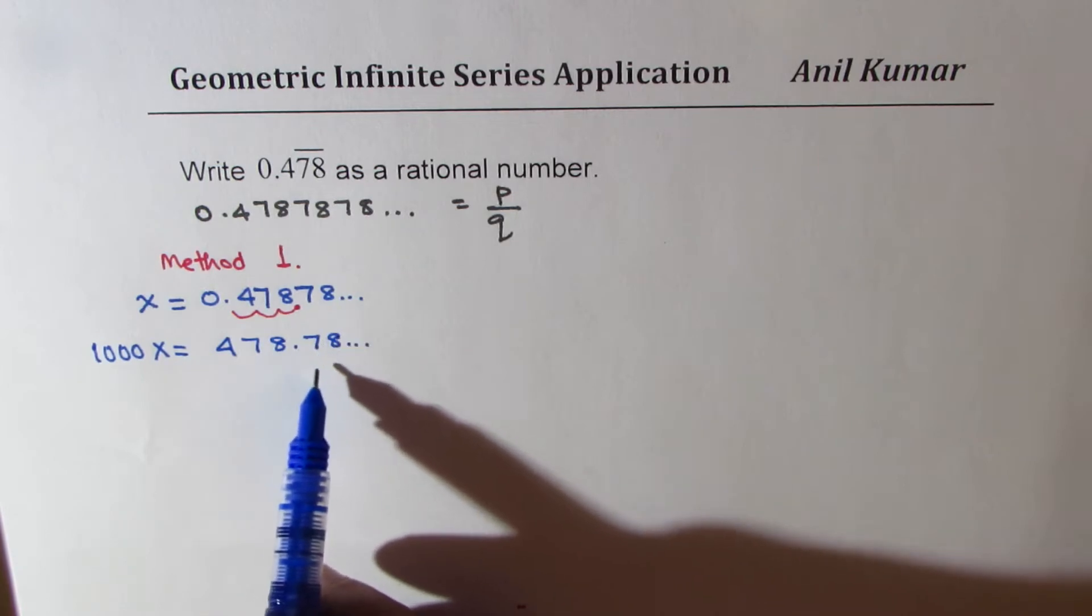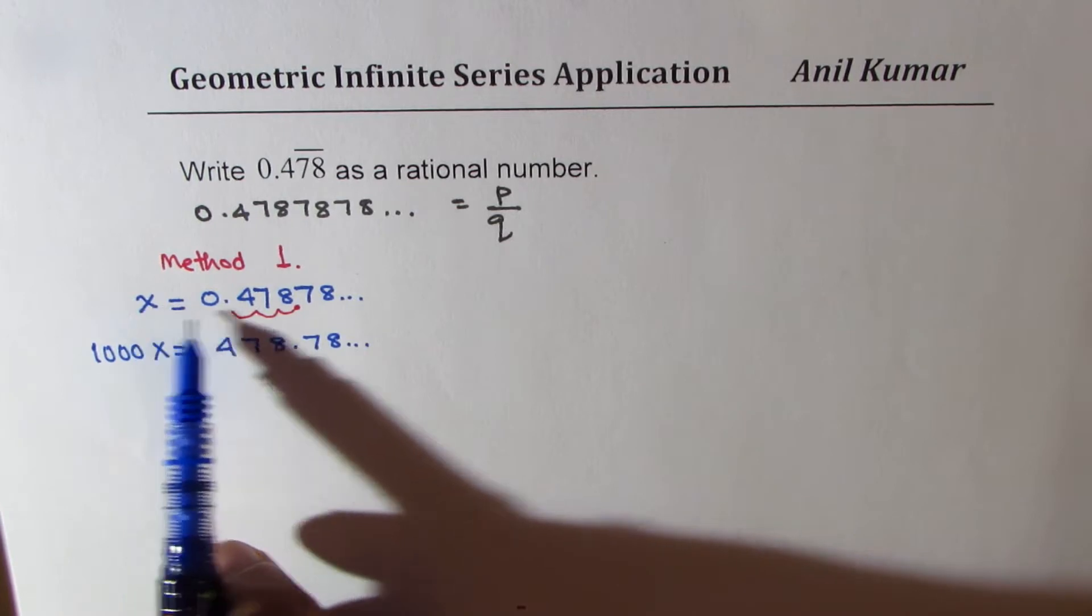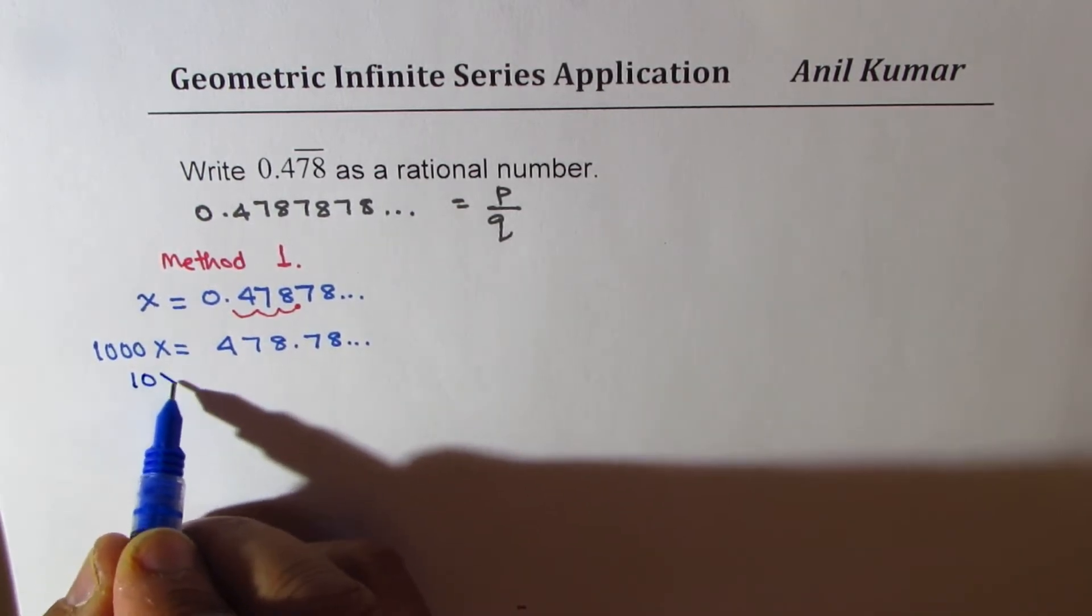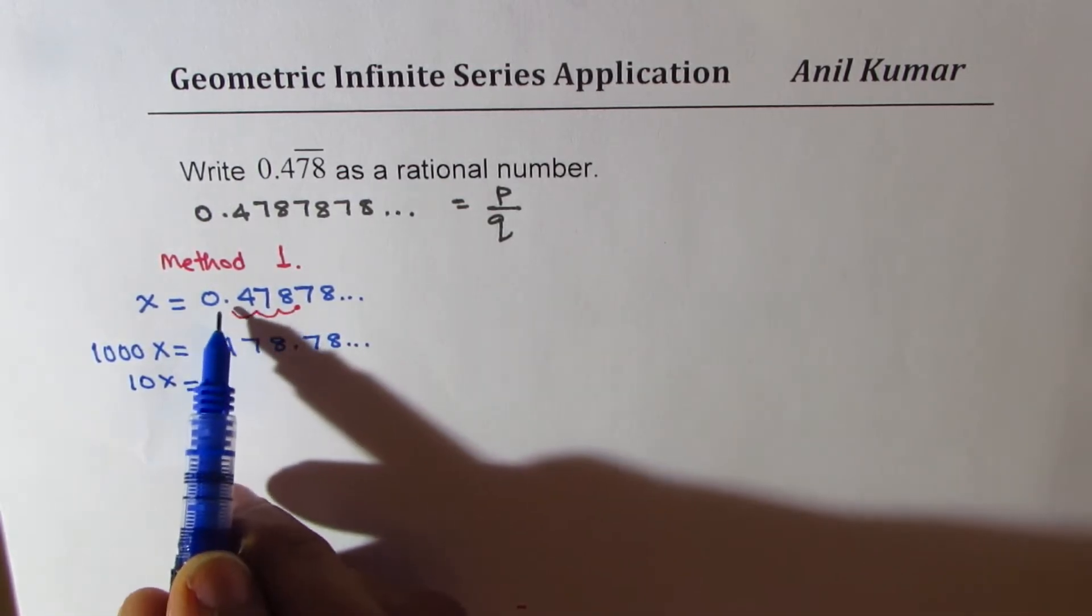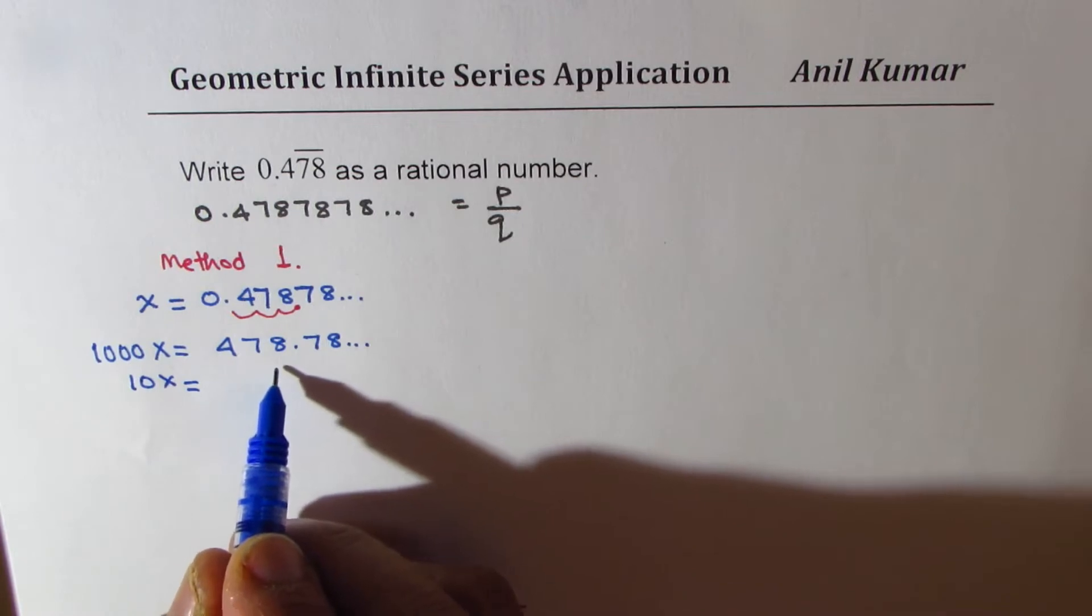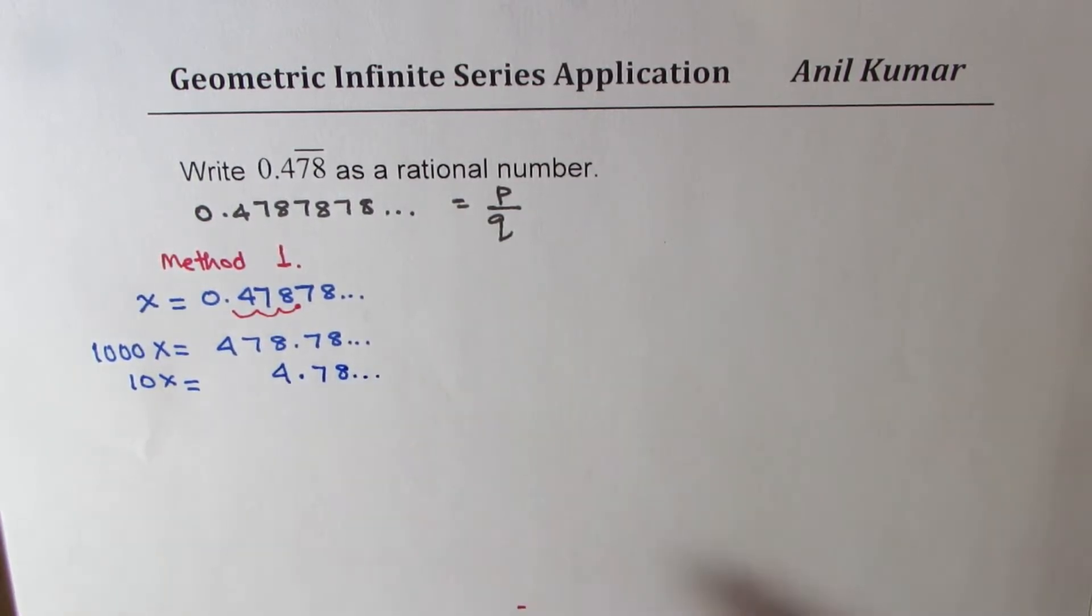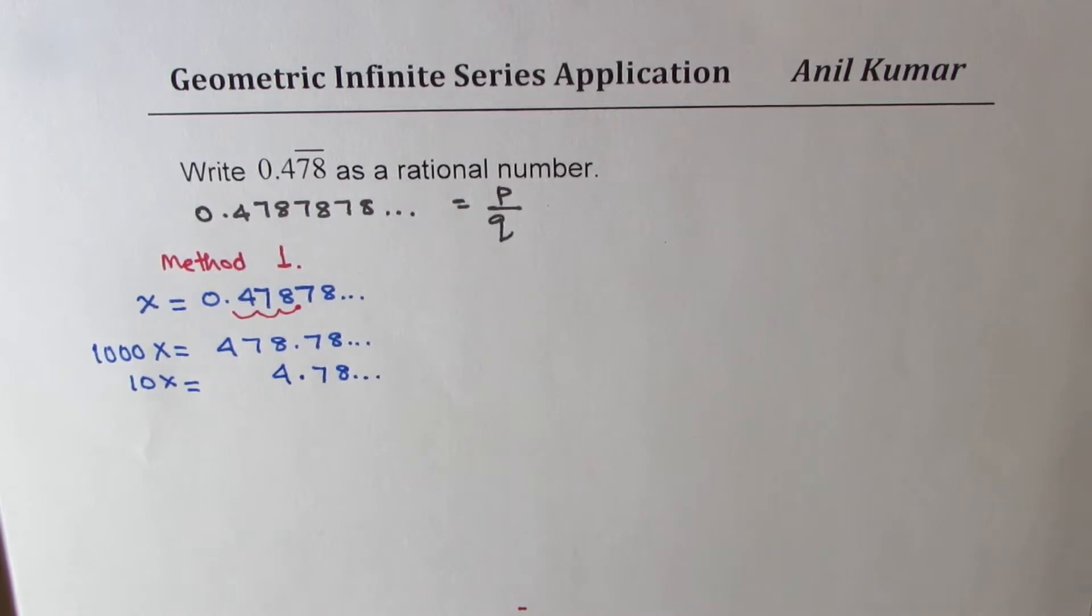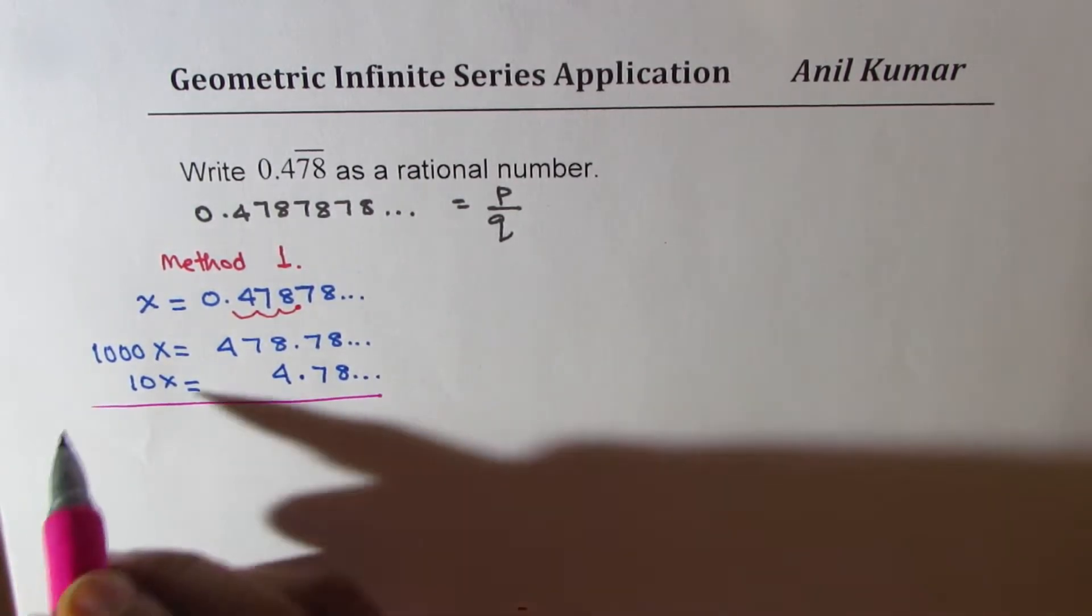Now at this stage we got this 78 repeating. What I could also do is multiply this by 10. So 10X will be, if decimal moves one place, I get 4.7878 recurring. Is that clear?